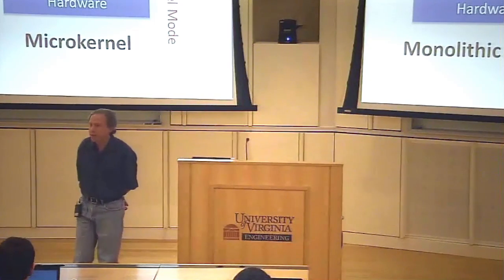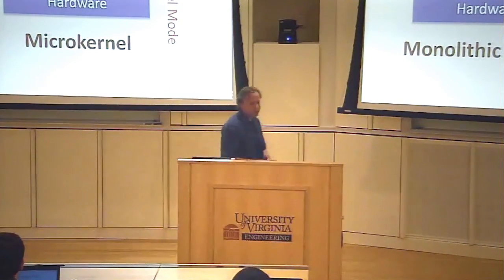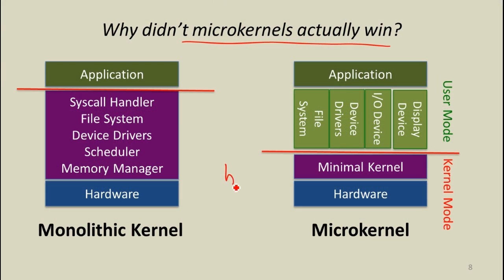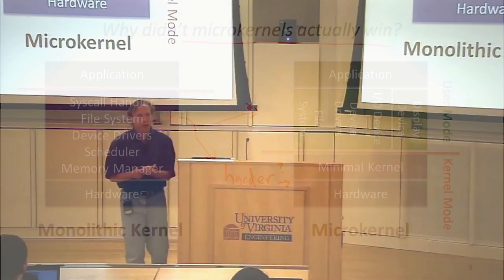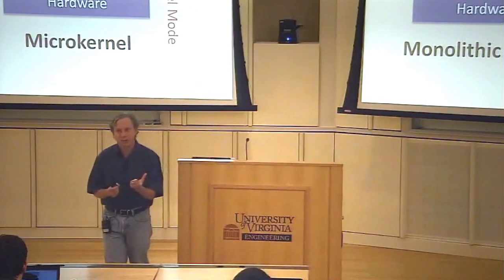Are there any drawbacks to this microkernel design? Which one is actually harder or easier to implement is a good question. In some ways the microkernel might be harder. We argue it's definitely harder to write a file system at kernel level than at user mode, but it might be harder to get a whole OS to work the way you want if you've got to deal with all these separate components rather than having a monolithic structure.